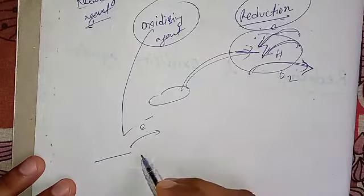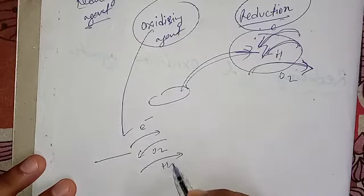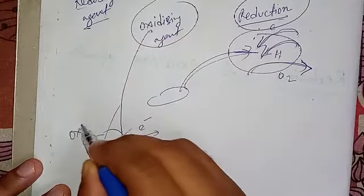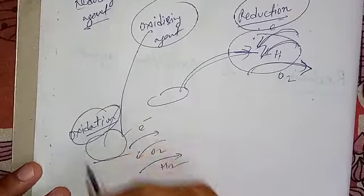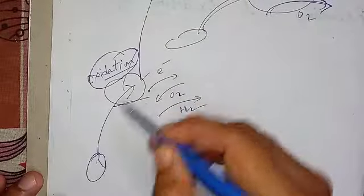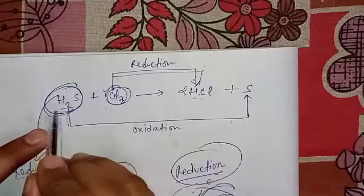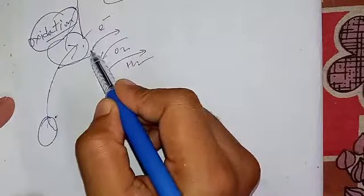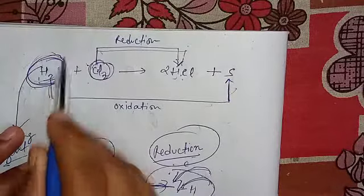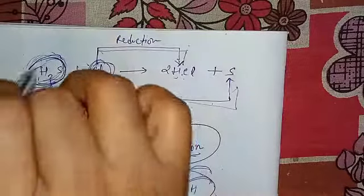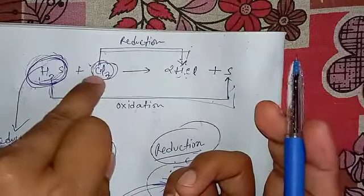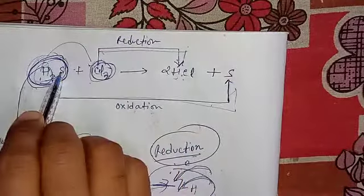Similarly, for oxidation: when a substance loses an electron, gains oxygen, or removes hydrogen, that substance is undergoing oxidation. A substance which helps another substance to get oxidized is the oxidizing agent. Here, H2S is getting oxidized — it is losing hydrogen. Who is helping H2S to get oxidized? Clearly, chlorine is taking the hydrogen, so chlorine is helping H2S to get oxidized. Therefore, chlorine is the oxidizing agent.